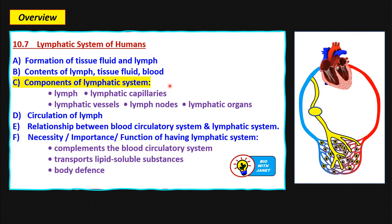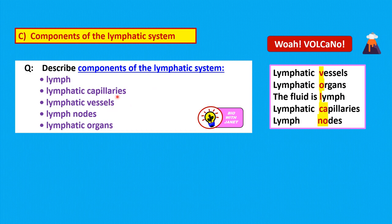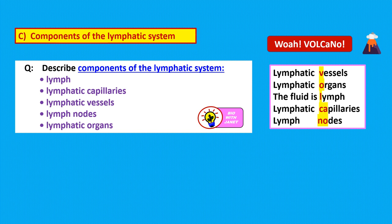Now let's go on to the third aspect of the lymphatic system: what are the components of the lymphatic system? We're going to discuss lymph, which is the fluid, then lymphatic capillaries, lymphatic vessels, lymph nodes and lymphatic organs. You can form an acronym here — VOLCANO: V is for lymphatic Vessels, O is for lymphatic Organs, L is for Lymph, CA is for lymphatic CApillaries, NO is for NOdes, the lymph nodes. The lymphatic system is defined as a circulatory system different from the blood circulatory system. It consists of the fluid called lymph, the network of lymph capillaries, larger lymphatic vessels and lymph nodes, and lymphatic organs such as the thymus gland, spleen, bone marrow, tonsils and appendix.